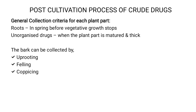Bark can be collected by uprooting, felling, or coppicing. In uprooting, the tree is uprooted and the bark is stripped off. In felling, a certain part of the tree is cut and the bark is stripped off. Coppicing means the tree is cut at a certain height from ground level, allowing new branches to grow, and the bark from those new branches is then stripped off.